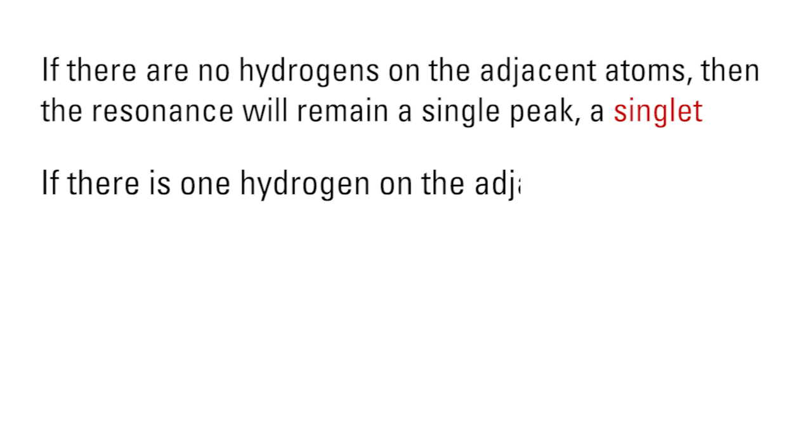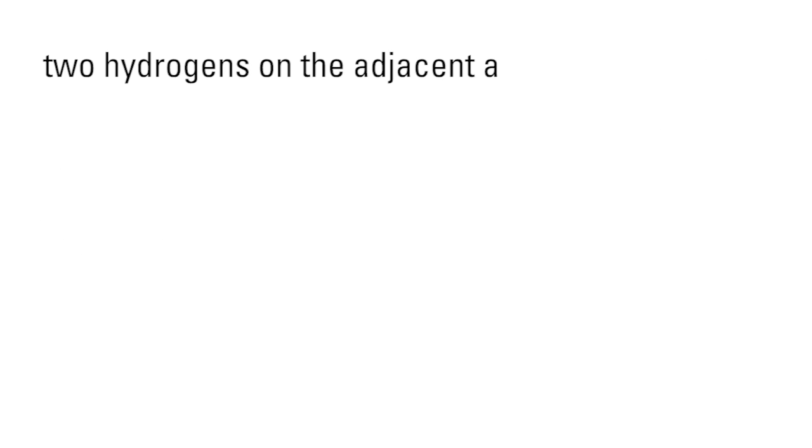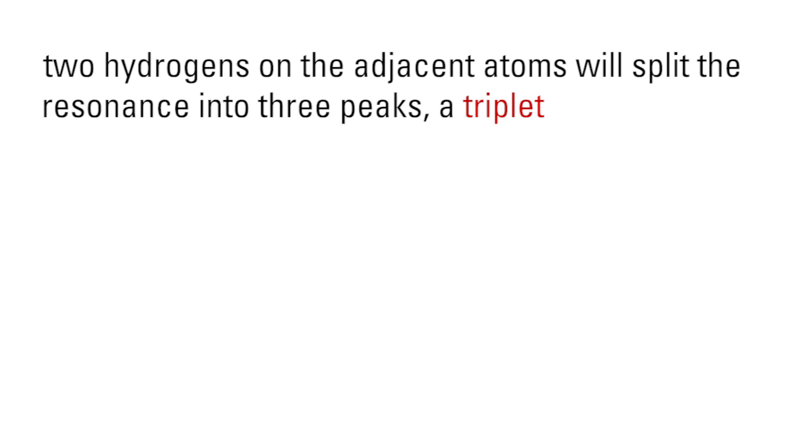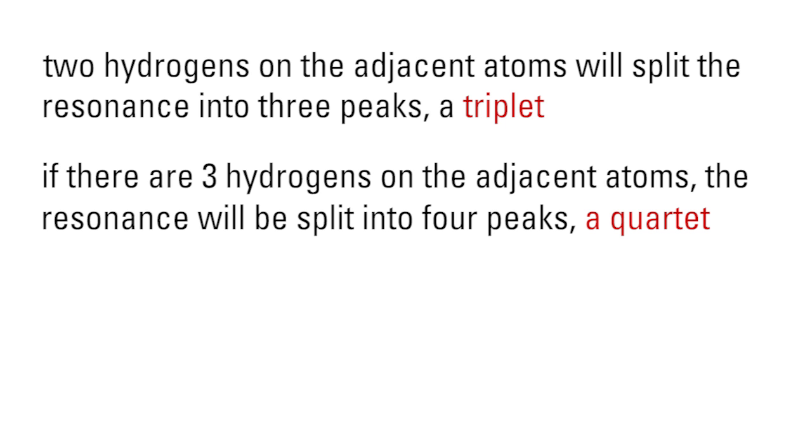If there is one hydrogen on the adjacent atoms, the resonance will be split into two peaks of equal size, a doublet. Two hydrogens on the adjacent atoms will split the resonance into three peaks, a triplet. If there are three hydrogens on the adjacent atoms, the resonance will be split into four peaks, a quartet.